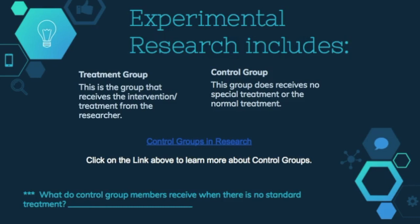Experimental research design involves choosing how best to answer a research question. One way to design an experiment is by using a control group — a group of subjects that did not get the treatment being studied in the experiment. The experimental group does get the treatment, and then the two groups are compared to see if the treatment had an effect. Control groups are important because they help the researcher eliminate the effects of variables they are not interested in studying, a process called controlling for other variables.